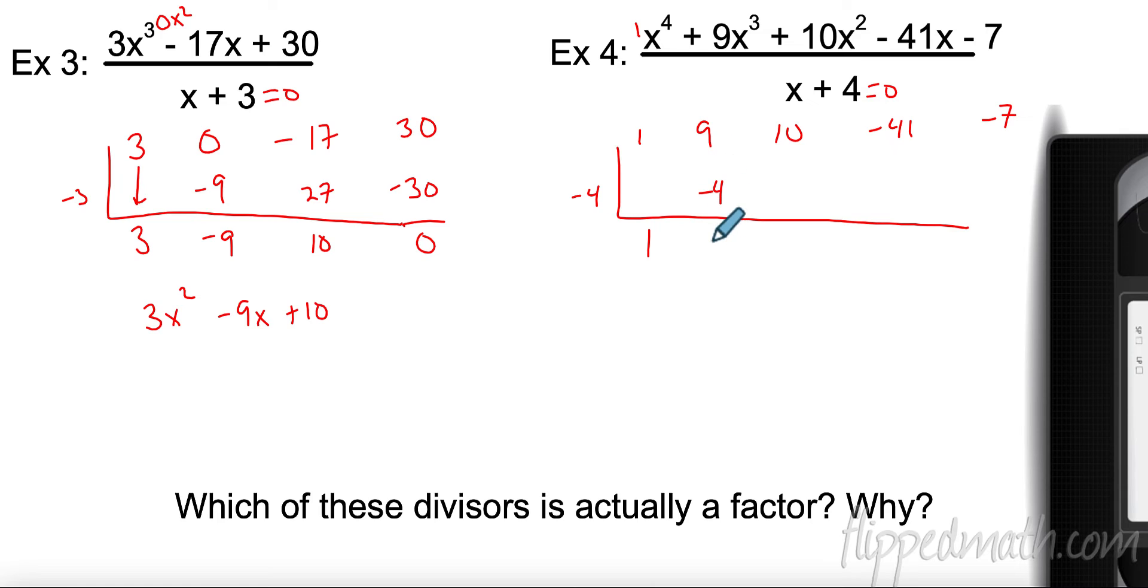Multiply negative 4 times 5 is negative 20. 10 and negative 20 is negative 10. Multiply negative 4 times negative 10 is a positive 40. All right, and then add down. That gives me negative 1. Negative 4 times negative 1 is positive 4. And I have negative 3 at the end. All right, so I started with the fourth power. I took one away. So this is going to be 1x to the third plus 5x squared minus 10x minus 1. Oh, I'm out of things. This is actually going to be my remainder. So my remainder is negative 3.